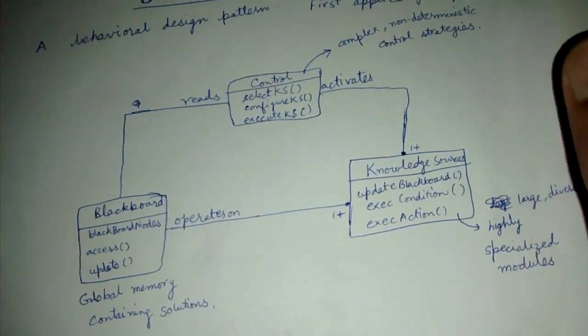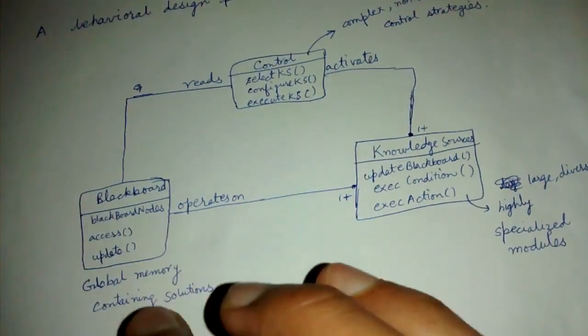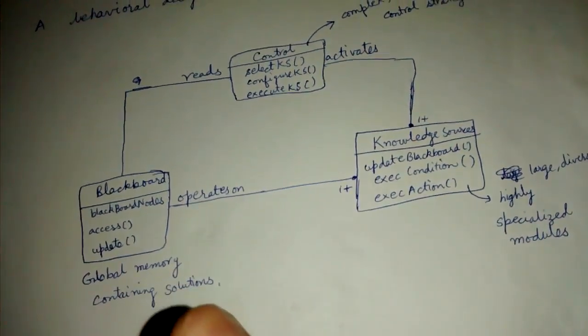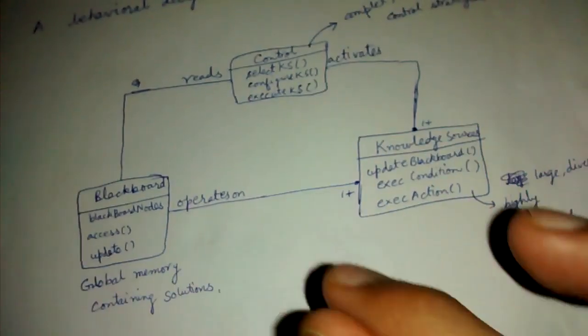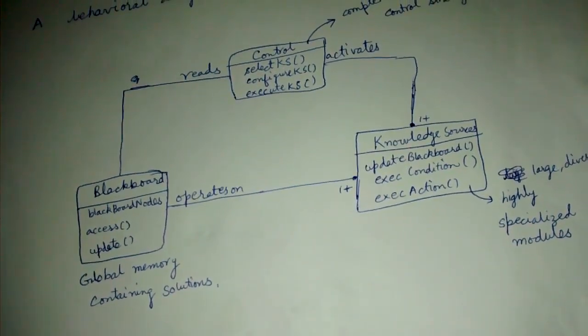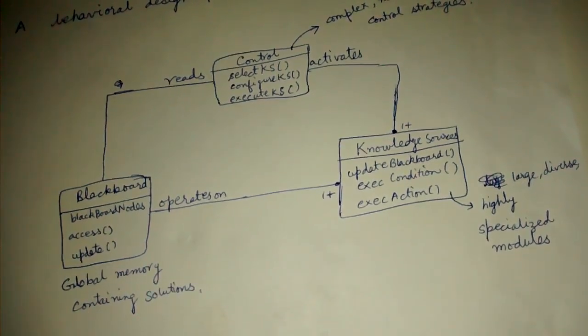The blackboard is basically a data structure - a global memory from where this control can read, knowledge sources can operate on that. This is a very brief description of blackboard design pattern. Thank you friends.